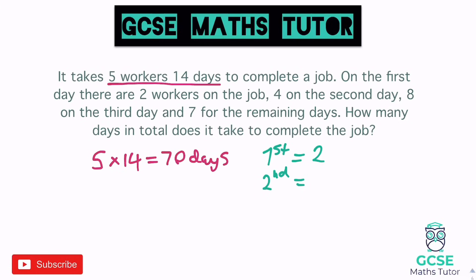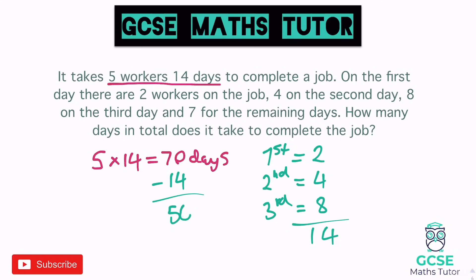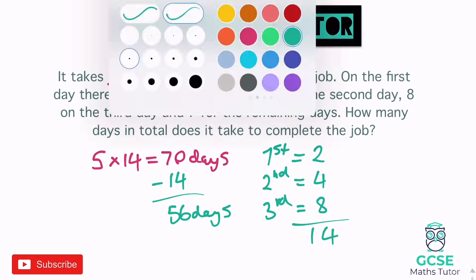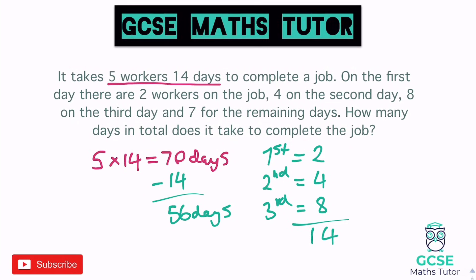On day two we have four workers — four days' worth of work. On day three we have eight workers — eight days' worth. Adding those up: eight plus four plus two is 14 days of work already done. 70 minus 14 leaves 56 days of work remaining. With seven workers for those remaining days, it's seven times faster, so 56 divided by seven gives us eight days.